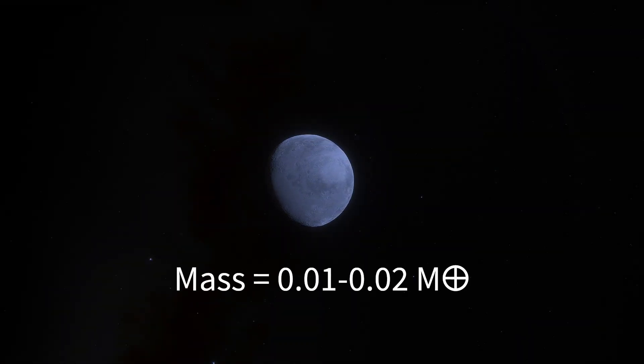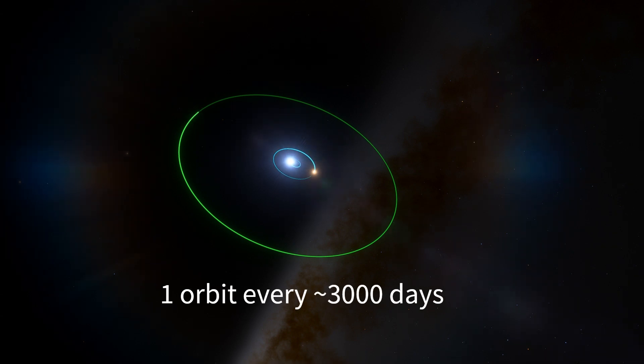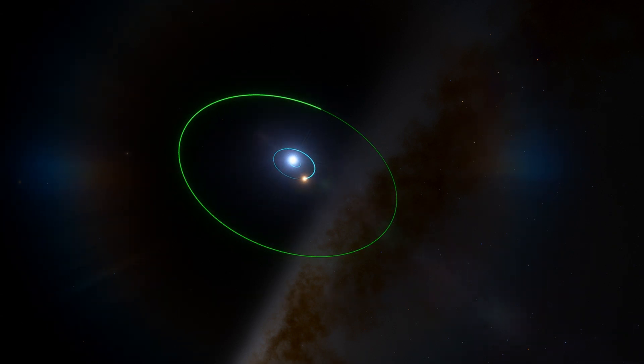is likely around the mass of the moon, or maybe slightly more massive, and orbits the entire triple system every 3,000 days or so. With this tiny object included, the model fits the observed data much better than without it.